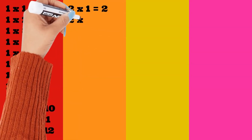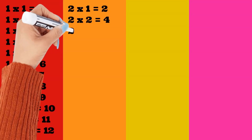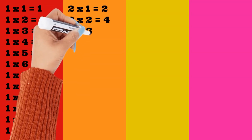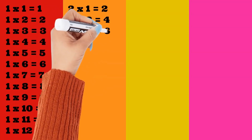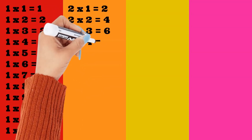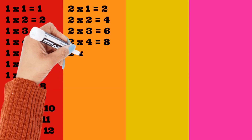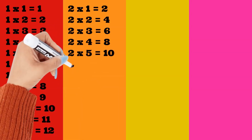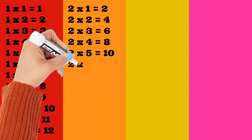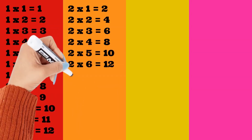2 times 1 is equal to 2. 2 times 2 is equal to 4. 2 times 3 is equal to 6. 2 times 4 is equal to 8. 2 times 5 is equal to 10. 2 times 6 is equal to 12.